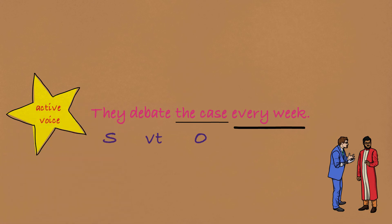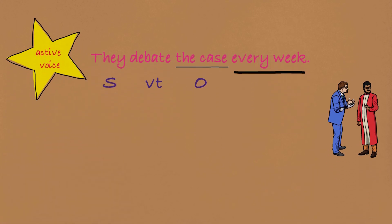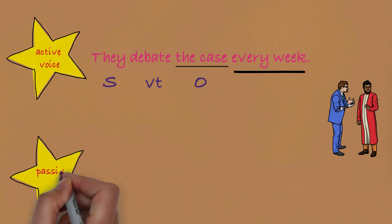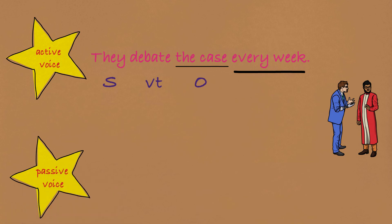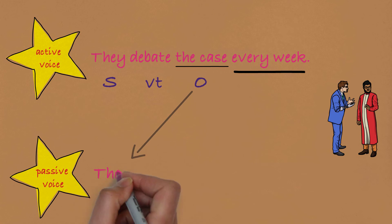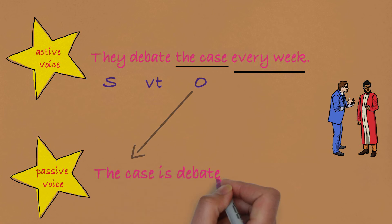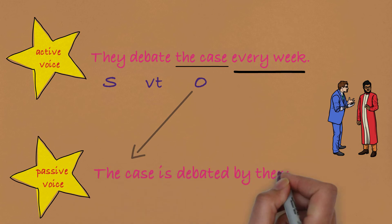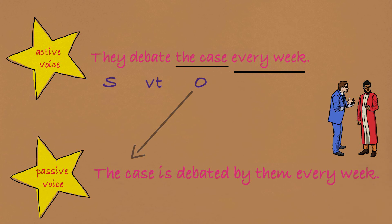这是一个很明显的主动语态。So what is 被动语态? Passive voice? Passive voice is actually quite simple if you put it in this way. So now 这个受词在被动变成主词的 — the case is debated by them every week.